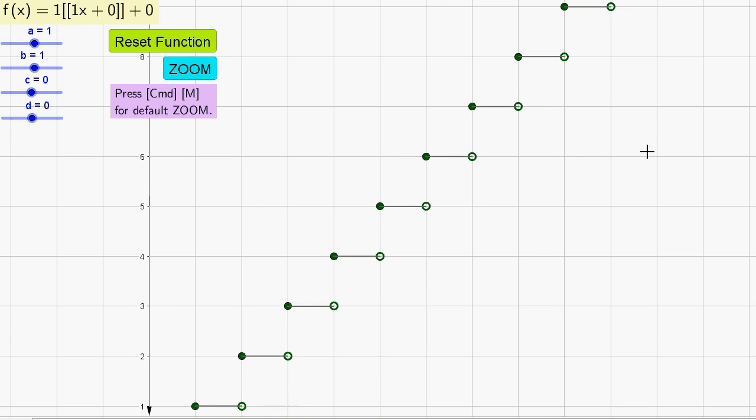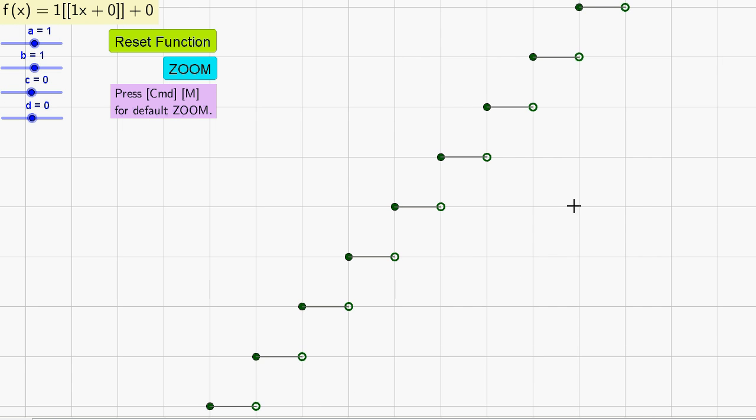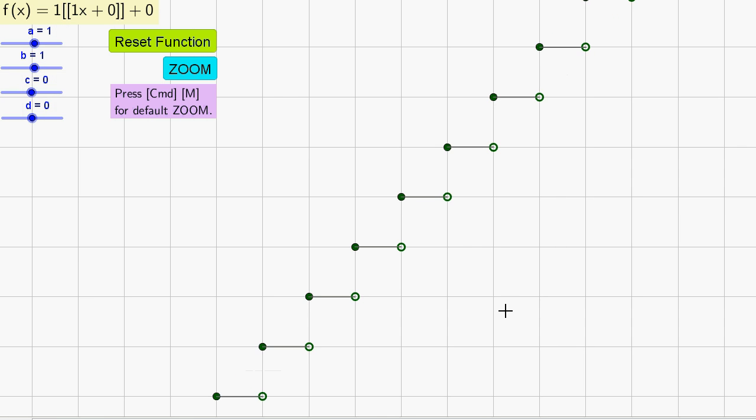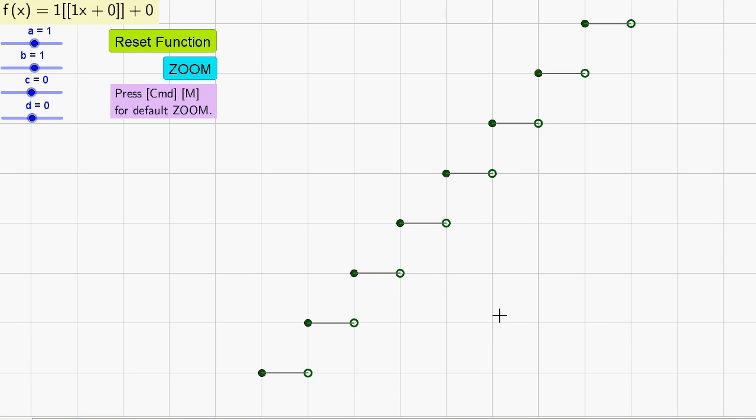But notice that when I scroll, now there's an infinite number of holes. Normally people hard code a certain finite number of holes and dots in these type of functions in order to graph them.